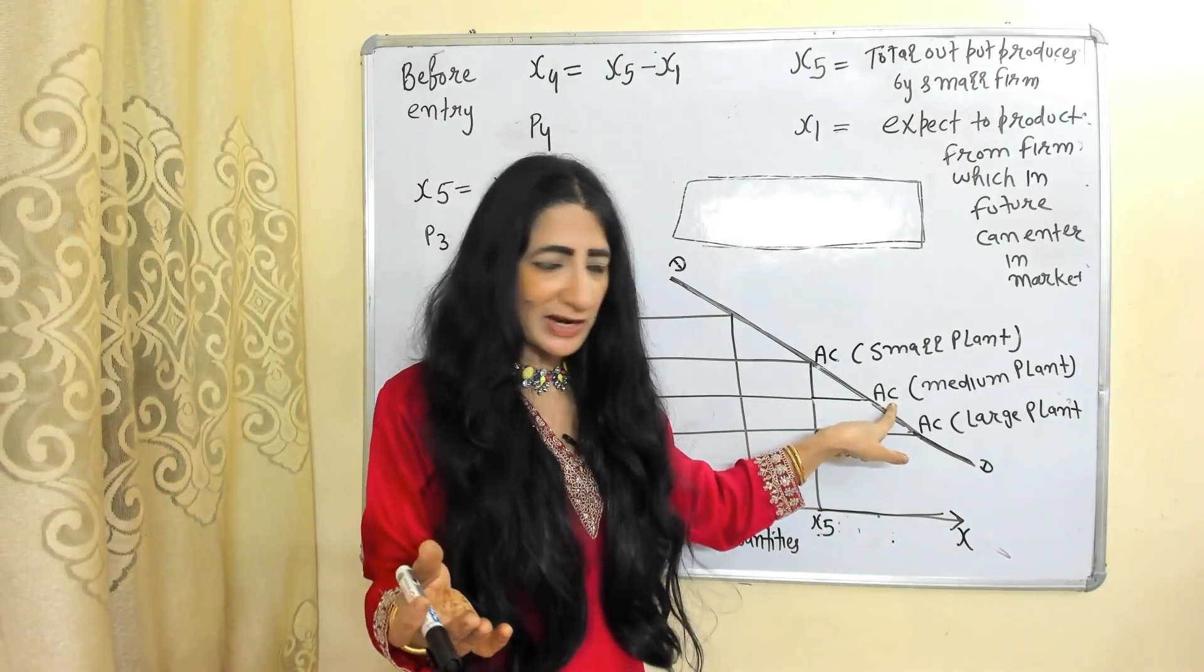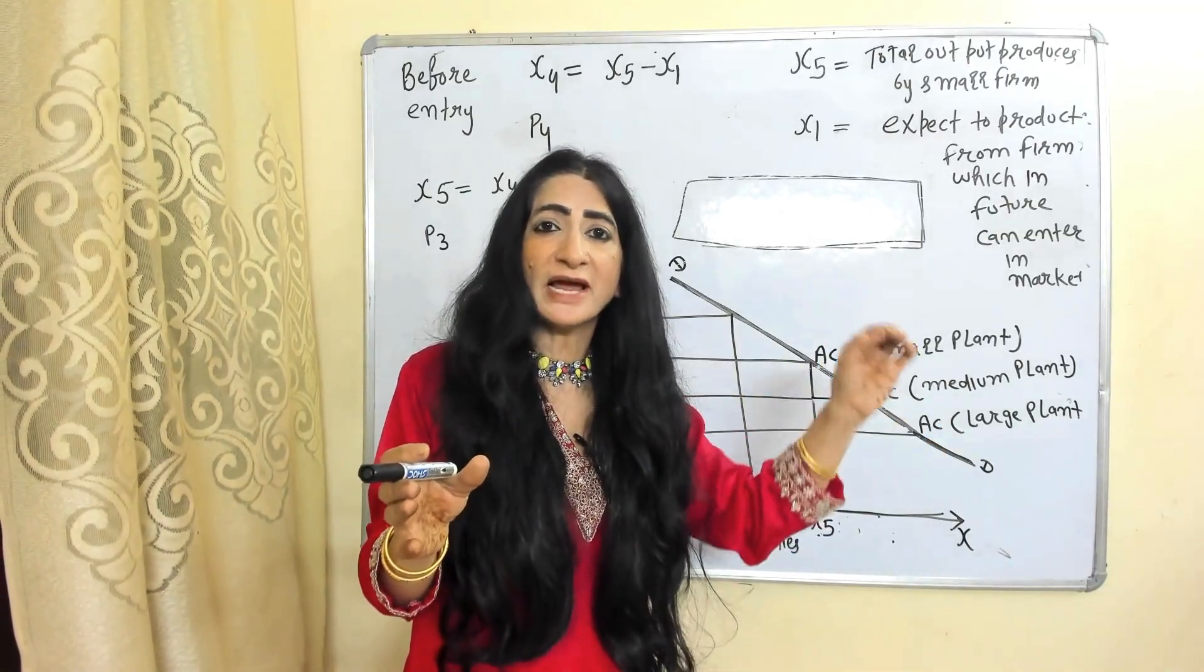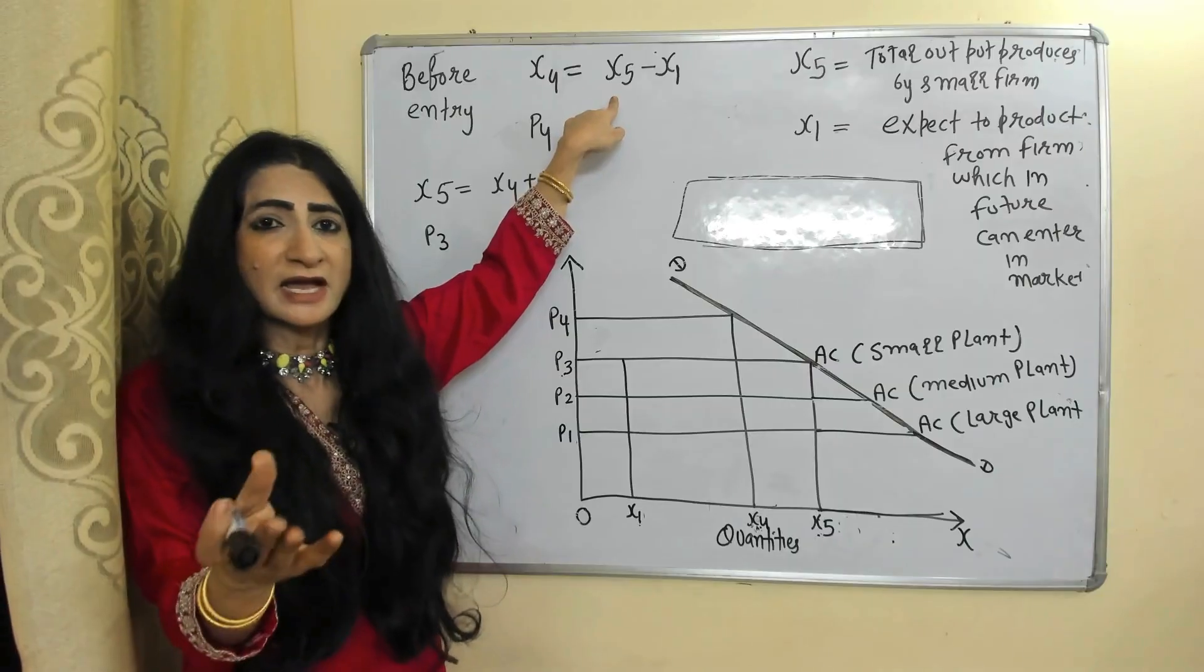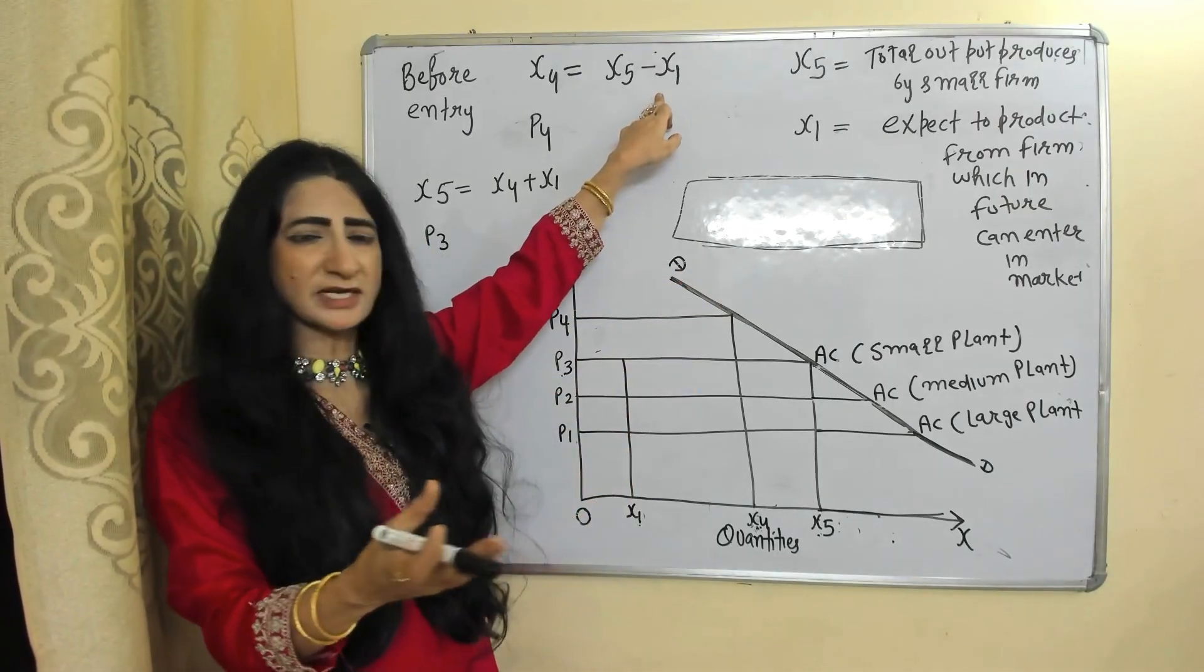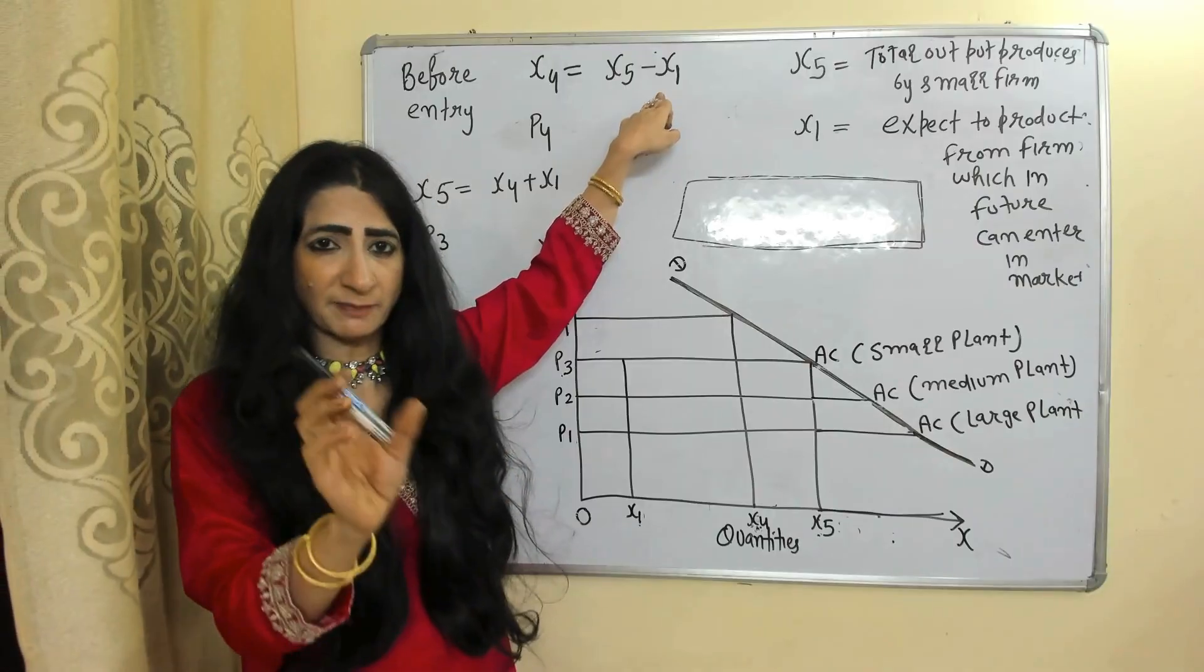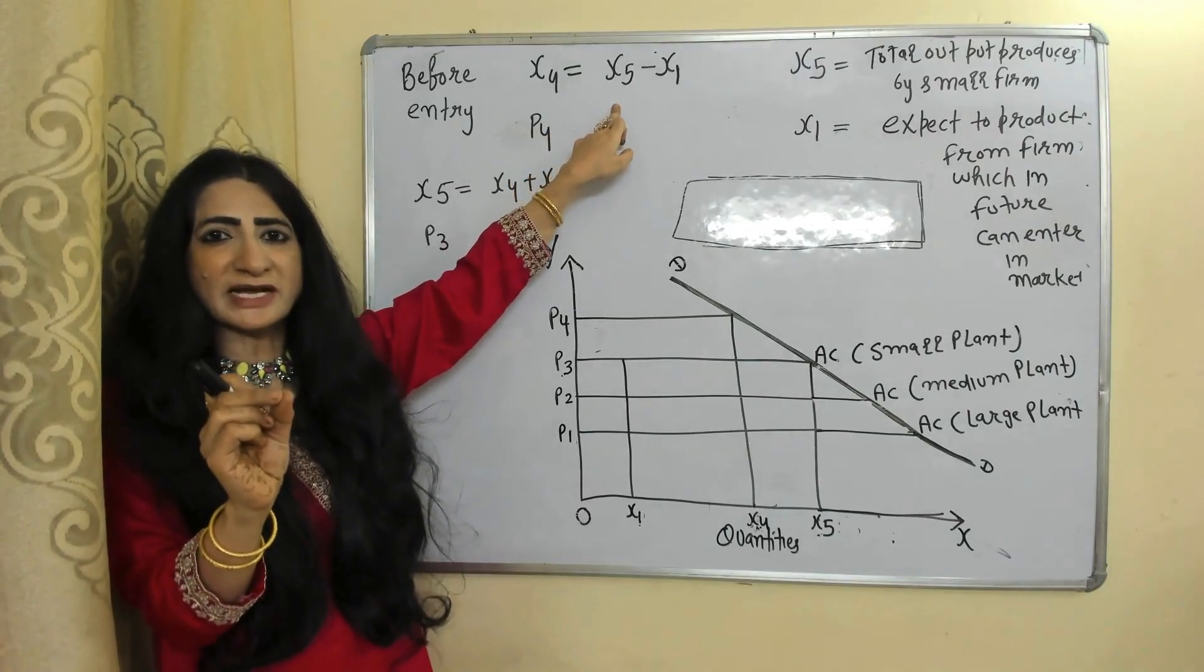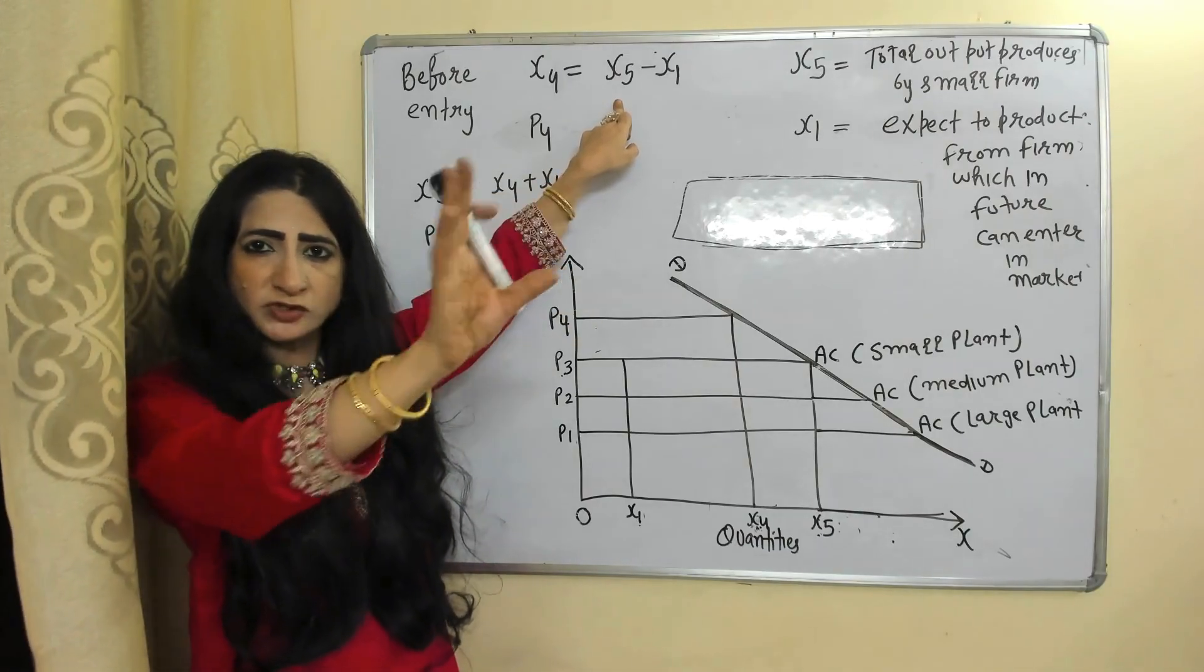Now we will see the diagram. Quantities on X-axis, price on Y-axis, demand curve, average cost belongs to small plant, average cost belongs to medium plant, average cost belongs to large plant, total output.